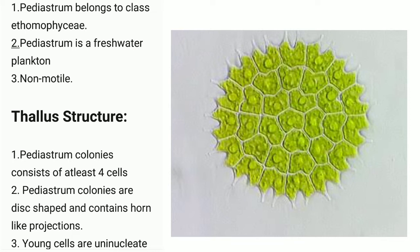Thallus structure. Point 1: Pediastrum colonies consist of at least 4 cells. Point 2: Pediastrum colonies are disc-shaped and contain horn-like projections, as you can see on the screen.